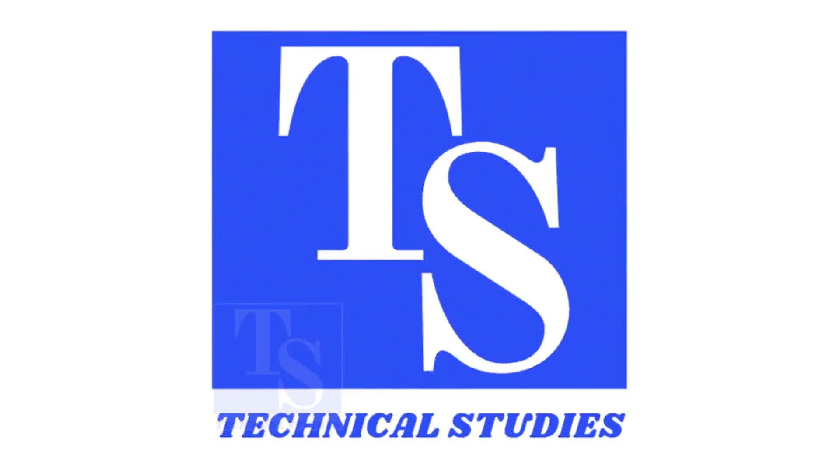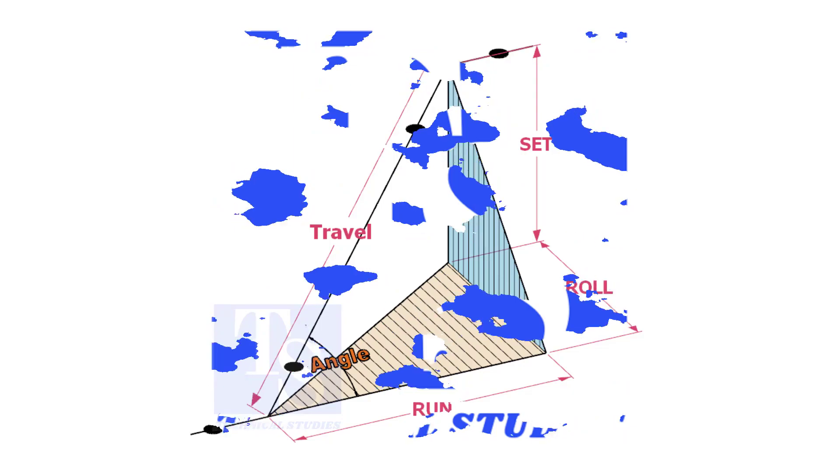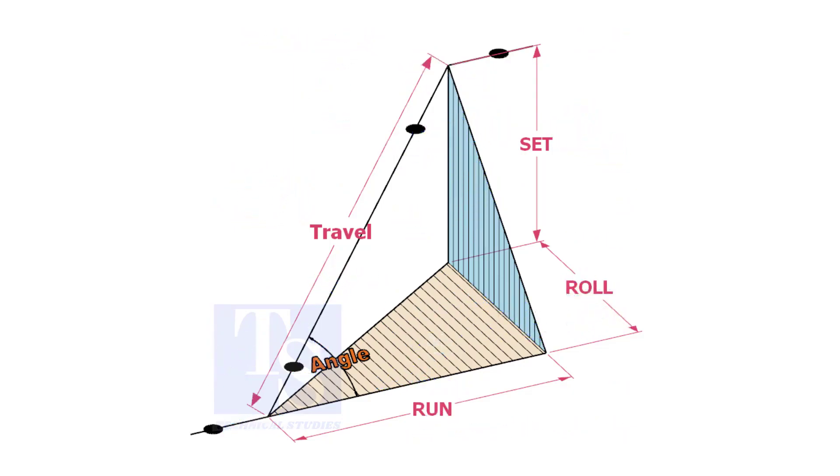Welcome to Technical Studies. In a piping drawing of a double rolled offset, usually the dimensions of the run, set, and roll are given.